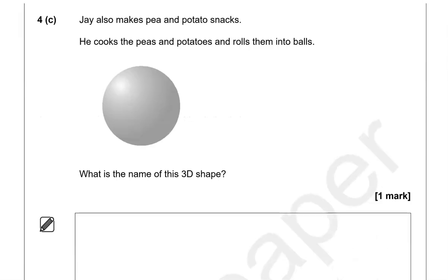Jay also makes pea and potato snacks. He cooks the peas and potatoes and rolls them into balls. What is the name of this 3D shape? The shape that looks like a ball is a sphere.